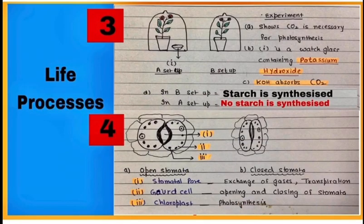In setup A, potassium hydroxide solution is kept in watch glass which absorbs carbon dioxide. Thus in this setup, starch is not synthesized as carbon dioxide is not available to the plant. While in setup B, starch is synthesized in the plant.